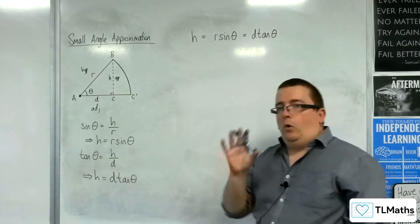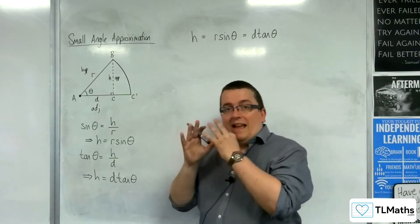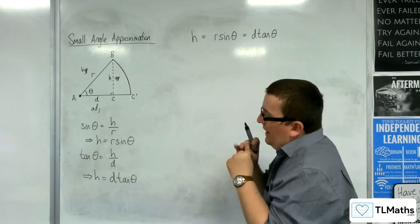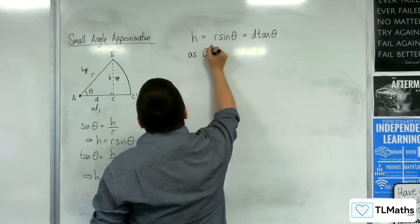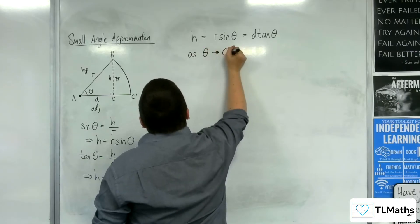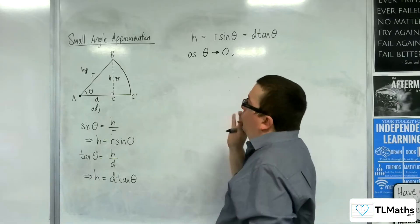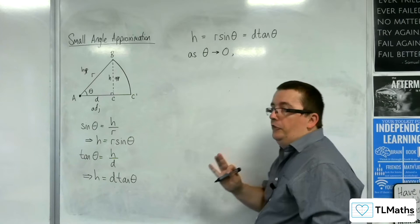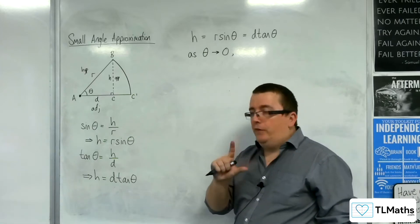Now what we're going to do is we're now going to think about theta, the angle, getting small. What happens when theta is a small angle? So as theta approaches 0, so it's getting smaller and smaller and smaller and smaller, what happens to H and what happens to D? Now let's have a look at H first.